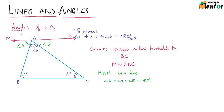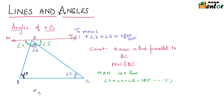So angle 3 plus angle 4 plus angle 5 equals 180 degrees, just because M, A, N is a line. Let's mark this as condition 1. We also see that angle 1 would be equal to angle 4. Can you tell me why?